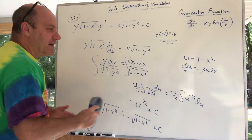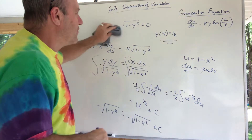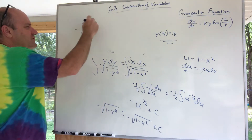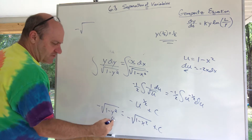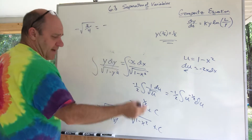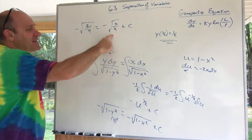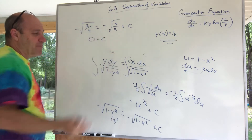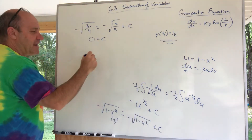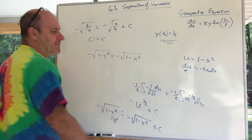Plugging in x = 1/2 and y = 1/2: negative square root of (1 minus (1/2)squared) equals negative square root of (1 minus (1/2)squared) plus C. That's negative square root of (3/4) equals negative square root of (3/4) plus C. Adding the square root of 3/4 to both sides gives C = 0. So the answer is: negative square root of (1 minus y squared) equals negative square root of (1 minus x squared).